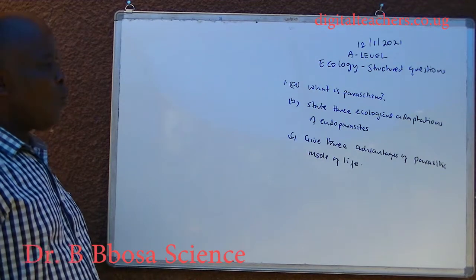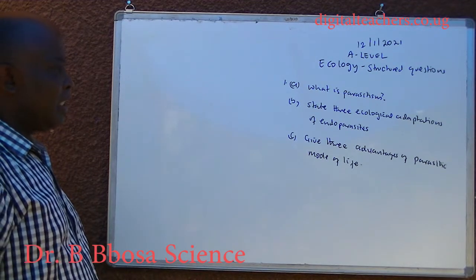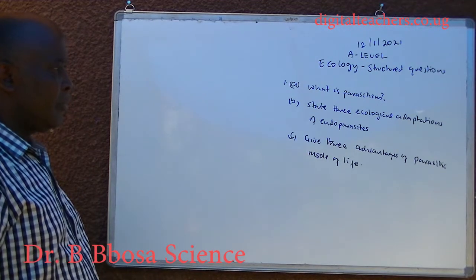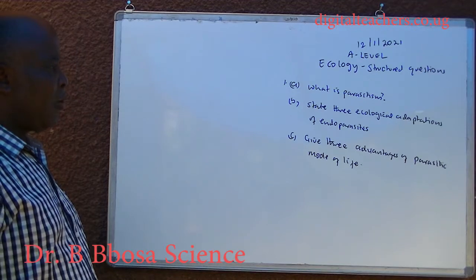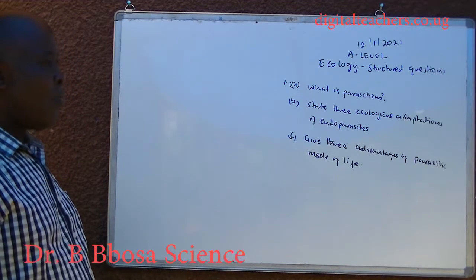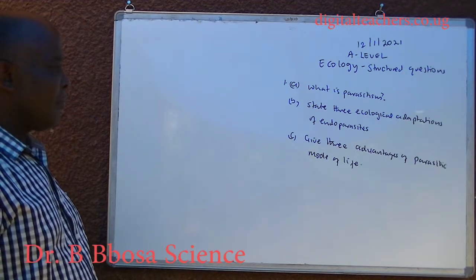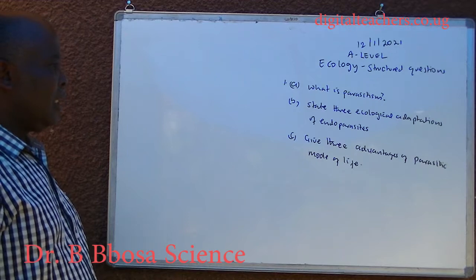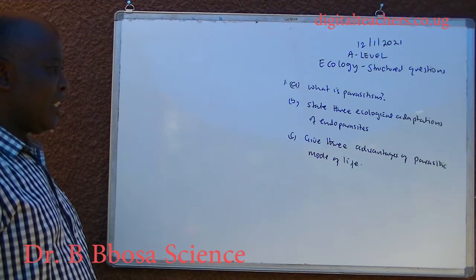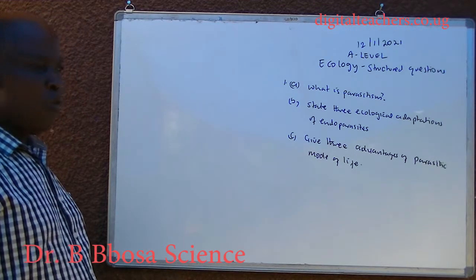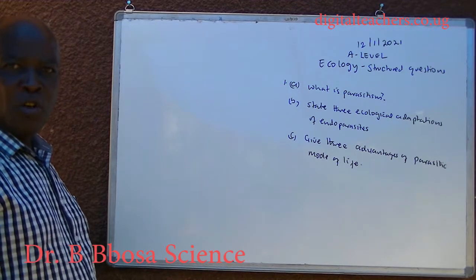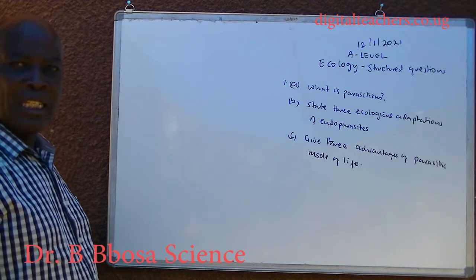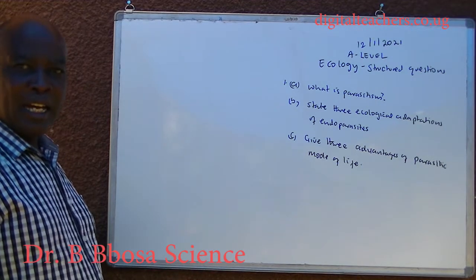Number 1. A. What is parasitism? B. State three ecological adaptations of endoparasites. C. Give three advantages of parasitic mode of life. You can pause and answer.